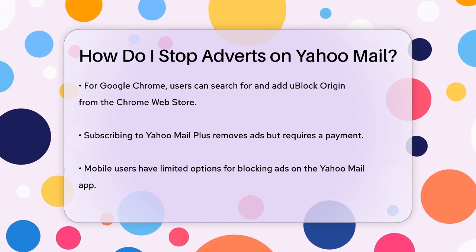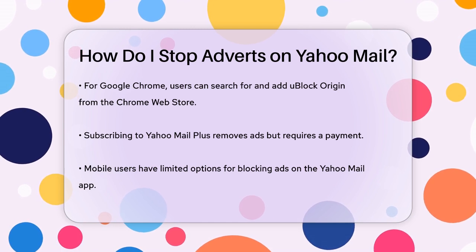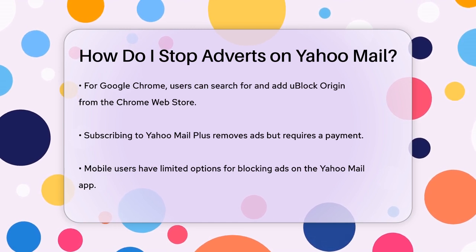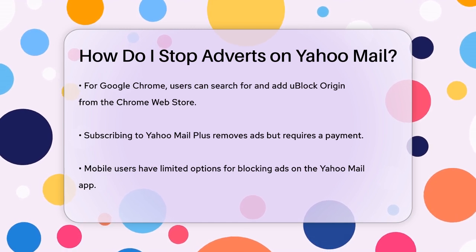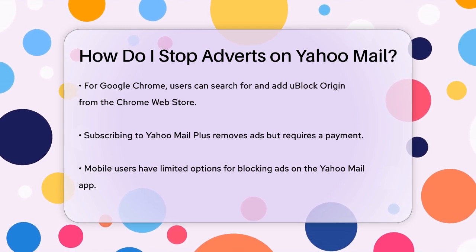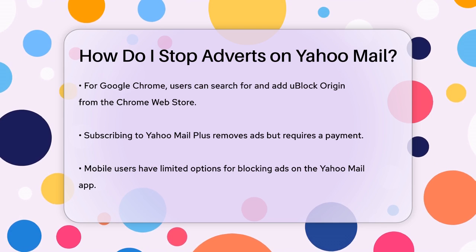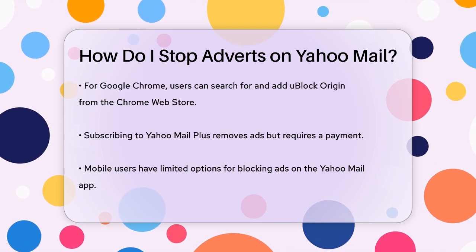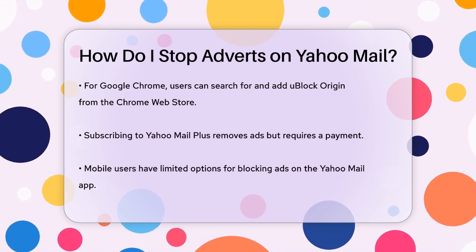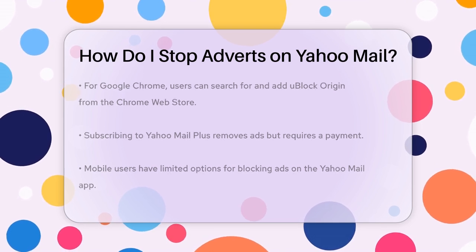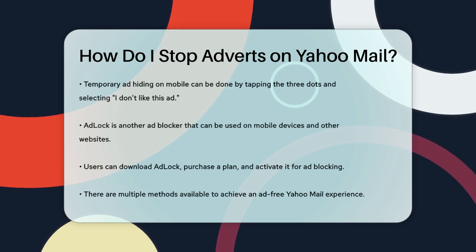If you're using a mobile device, the options are a bit more limited. You can't permanently block ads on the Yahoo Mail app, but you can temporarily hide them by tapping the three dots on the ad and selecting 'I don't like this ad'.